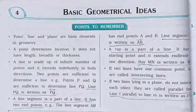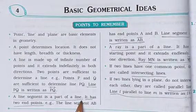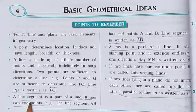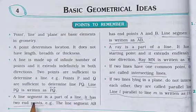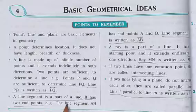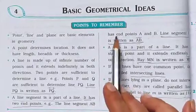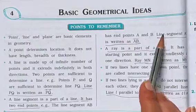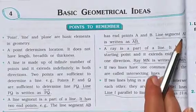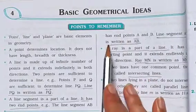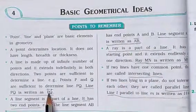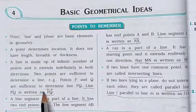A line segment is a part of a line and it has two end points. The line segment AB has end points A and B. Line segment AB is written with a bar over AB — that means the segment is closed at both ends.